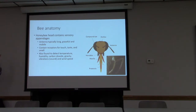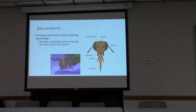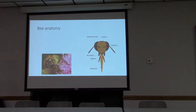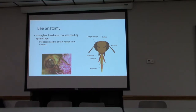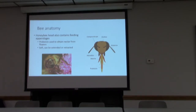The bees have feeding appendages including the mandibles, which differ a little between the castes. They also have the proboscis — and I don't know why they have such big names for tongues — and that's what they use to suck up nectar from the flowers. The proboscis is soft and can be extended or retracted.